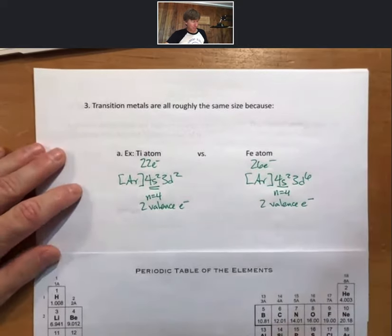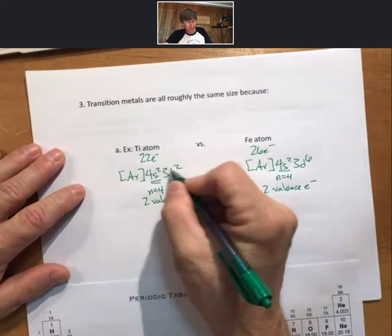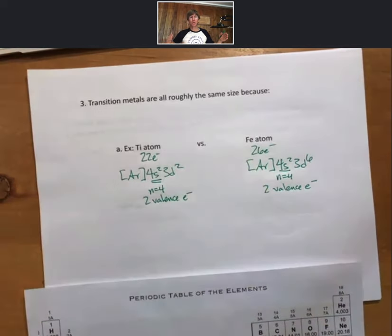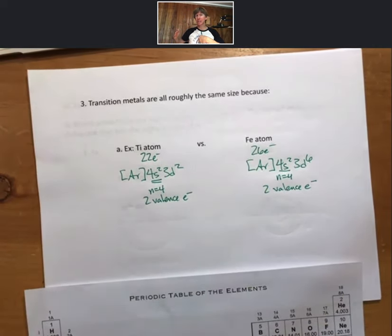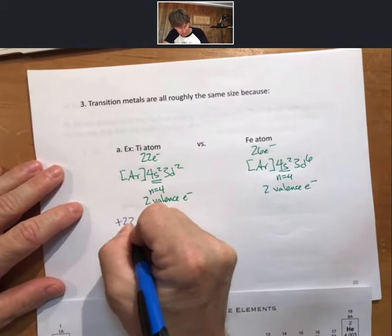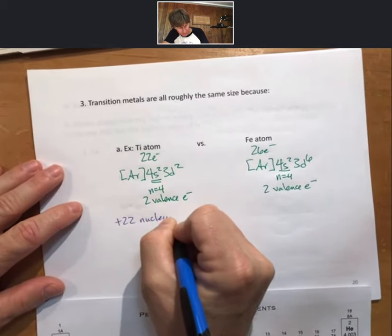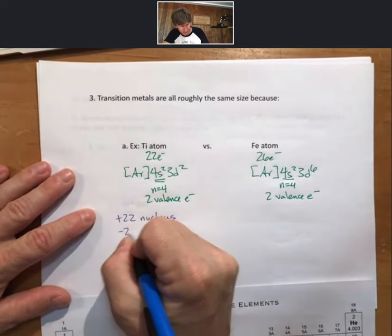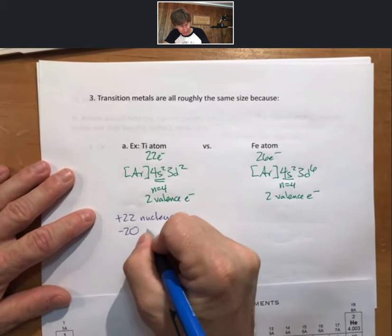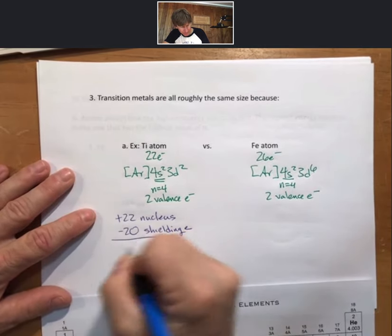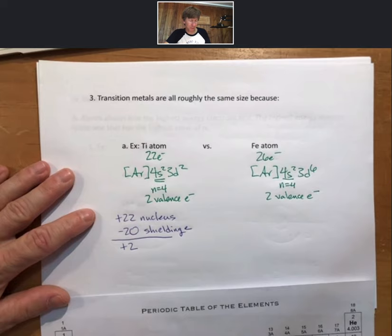This time we will do all of the other electrons, including the d electrons in n equals three, as core electrons. Core electrons meaning between the nucleus and the n equals four electrons. So for titanium, plus twenty-two nucleus, there are minus twenty shielding electrons, plus two effective nuclear charge.